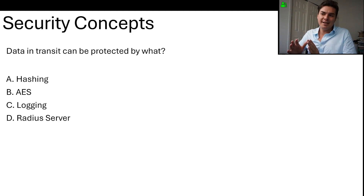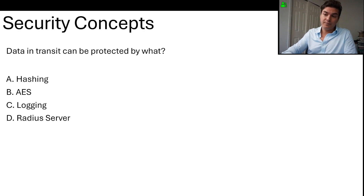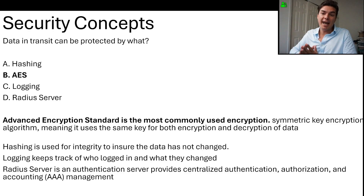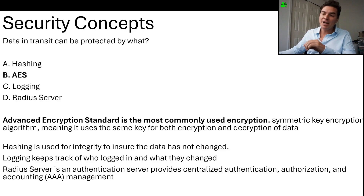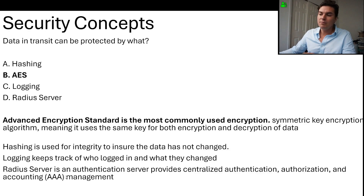Data in transit can be protected by what? Hashing, AES, logging, or a RADIUS server? The answer is B — AES, Advanced Encryption Standard. It's the most commonly used encryption. It's a symmetric key encryption algorithm, meaning both keys are the same for both encryption and decryption. Hashing is used for integrity, to ensure data has not changed. Logging keeps track of who logged in and what they changed. A RADIUS server is an authentication server that provides centralized authentication, authorization, and accounting — that's AAA.